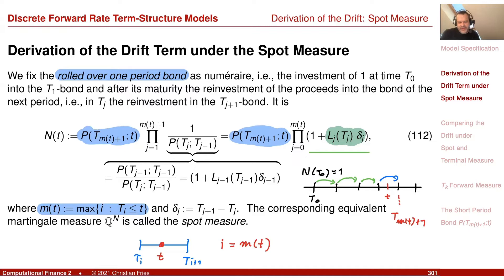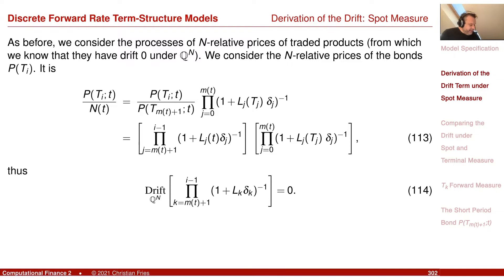I introduce a shortening of notation here: I use delta_j for the time period length to make the notation more compact. Let's go quickly through the derivation of the drift under the spot measure and then discuss the differences between the two. As before, we define a martingale — a traded asset: a bond maturing at T_i.